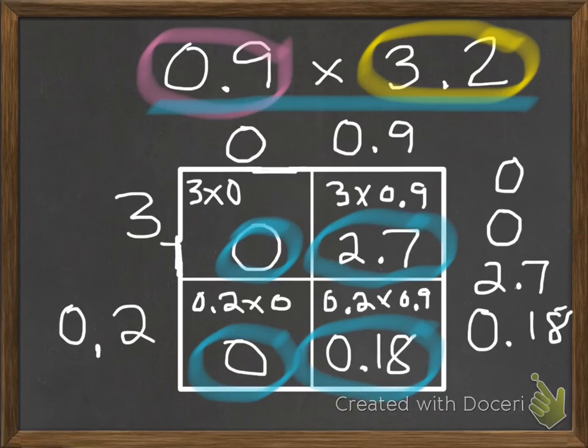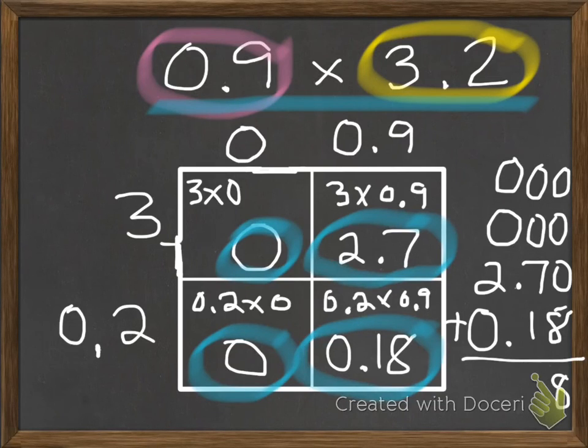As you can see, I have lined up my decimal points. And if I would like, I can put in some phantom ghost zeros to hold the places. When I do my final adding, I get 2.88.